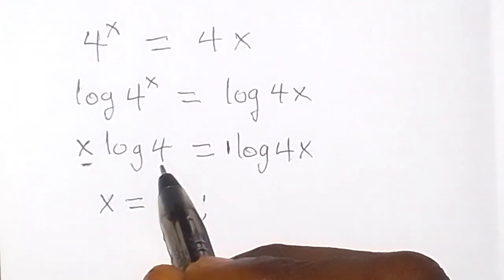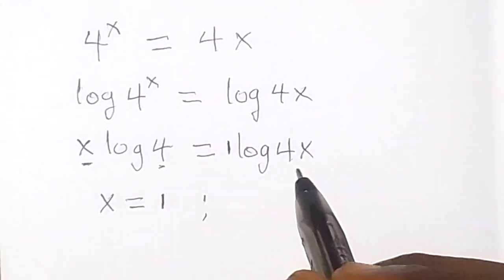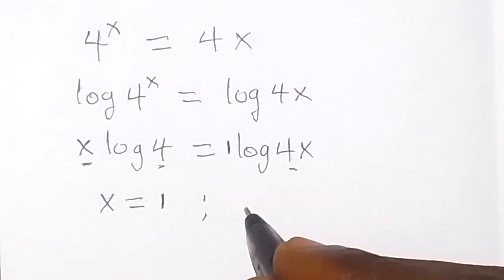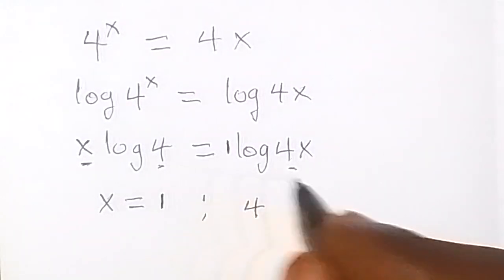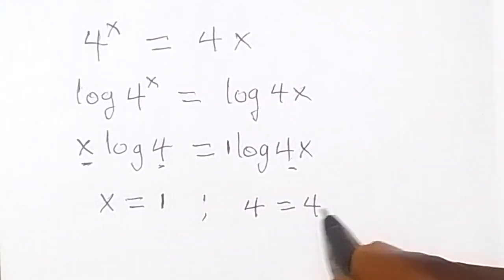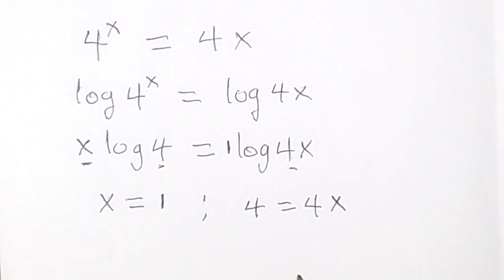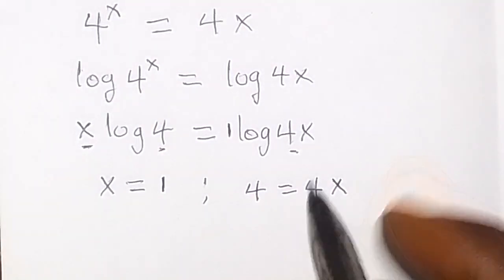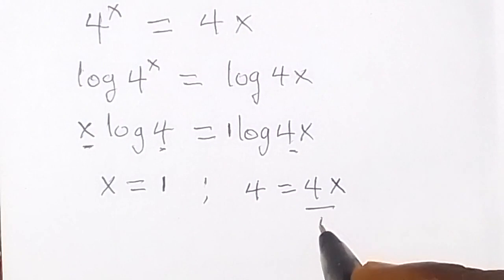Also let's equate what we have in front of the log. Here we have 4 on this side, then equals to 4x. So let's see what we have from there and find x. We can divide both sides by 4.